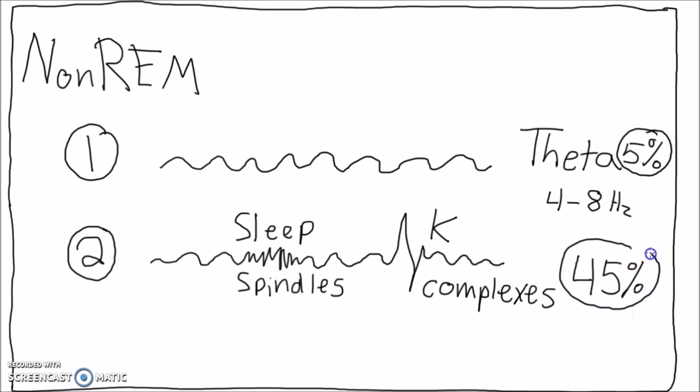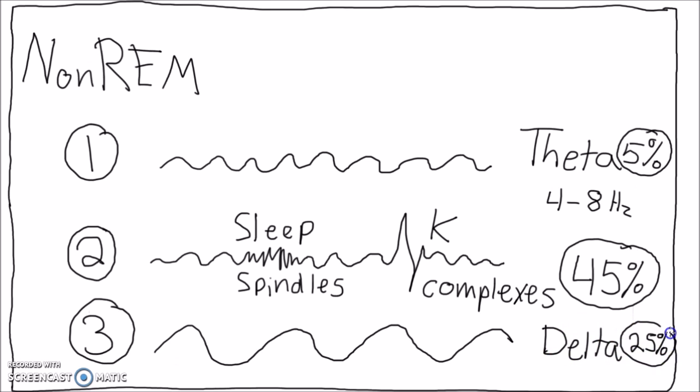Next, Bob enters stage 3 of non-REM, about 25% of total sleep time. This stage is reflected on the EEG as delta waves, which have the lowest frequency, below 4 Hz, and the highest amplitude. This is the deepest stage of sleep, where Bob loses all bodily awareness. Unfortunately for some patients, this is also when sleepwalking, night terrors, and bedwetting can occur.